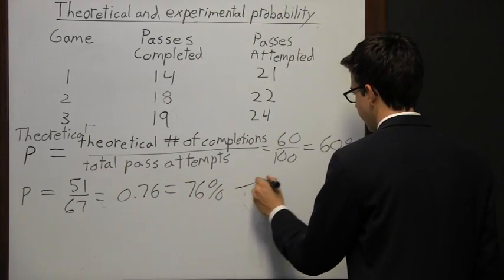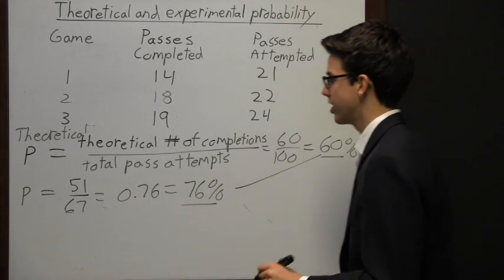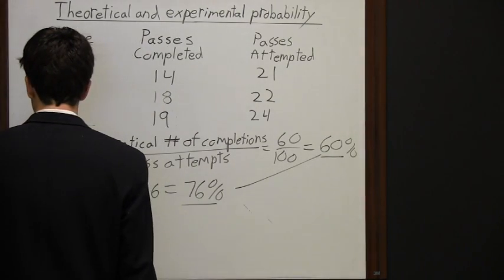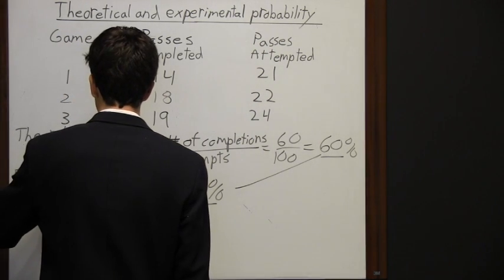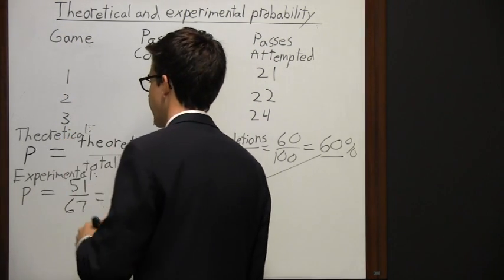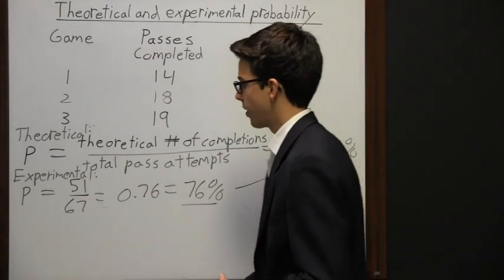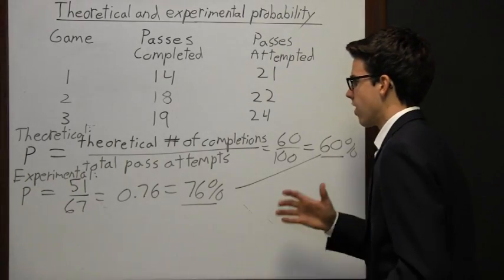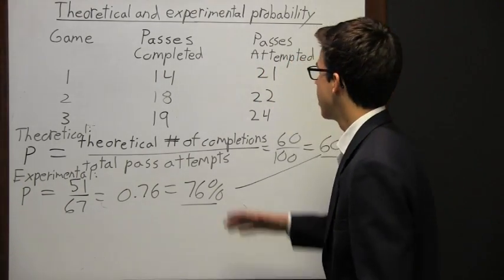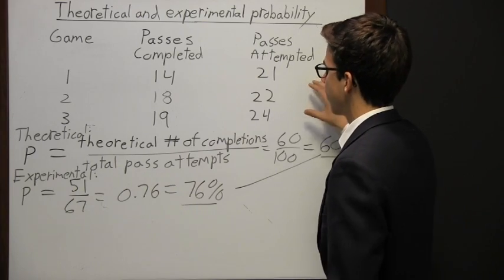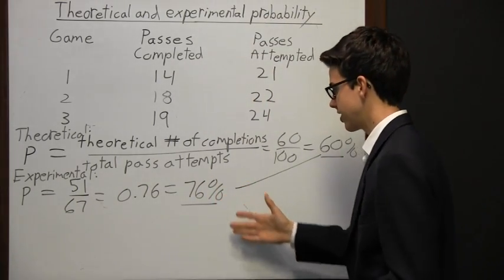If you notice, these two percentages are very different, and that's the difference between theoretical probability and experimental probability. Theoretical probability is calculated by just looking at the odds of what's going to happen — someone could examine this quarterback's throwing ability, look at his opponents, and say the theoretical probability is that he'll complete 60 percent of his passes. But when it's all said and done, we have experimental probability, which is what he actually did: 76 percent.